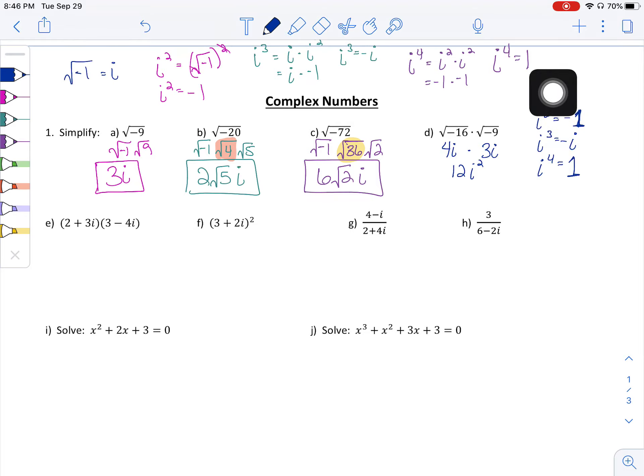So when we multiply these together, we would get 12i squared. And using our little i cycle list, i squared is negative 1. So 12 times negative 1 is negative 12. So just be careful when you have radicals that have negatives in them being multiplied together because they don't always do what you think they should.